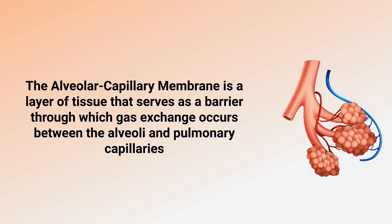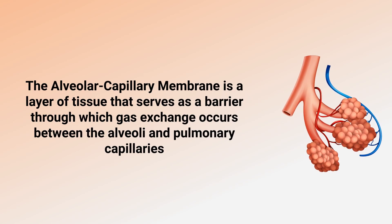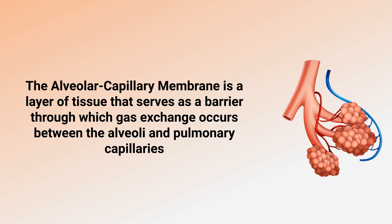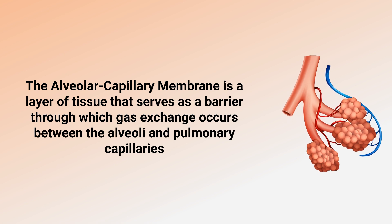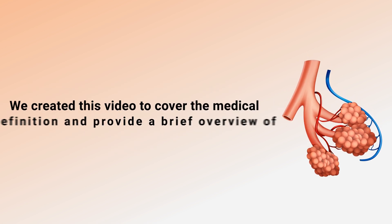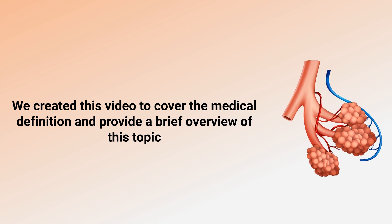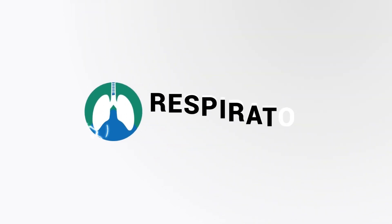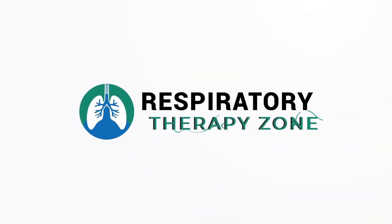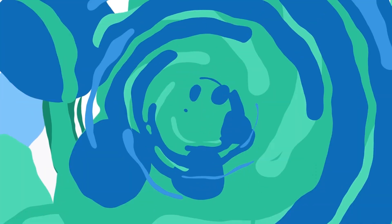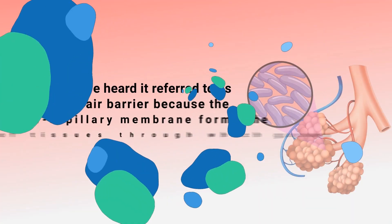The alveolar capillary membrane is a layer of tissue that serves as a barrier through which gas exchange occurs between the alveoli and pulmonary capillaries. We created this video to cover the medical definition and provide a brief overview of this topic.